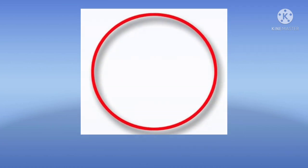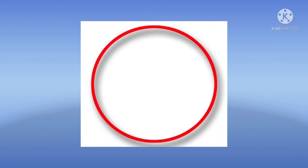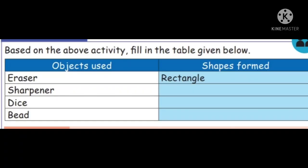Now we have to write the book exercise. Let's start. Based on the above activity, fill in the table given below. First column is object used, second column is shapes formed. First one, Eraser. Its impression we get rectangle. Already it is done for us.